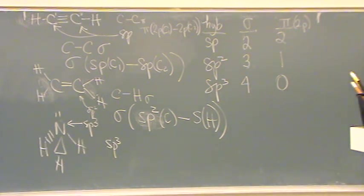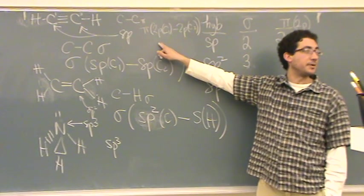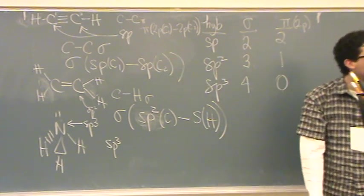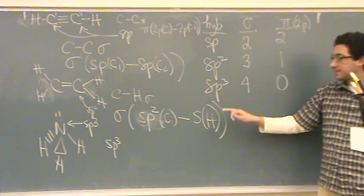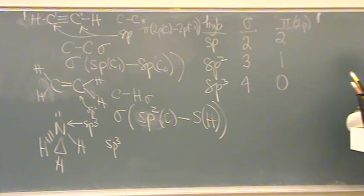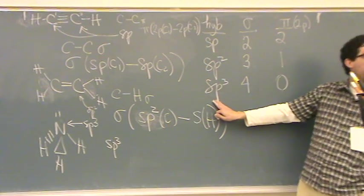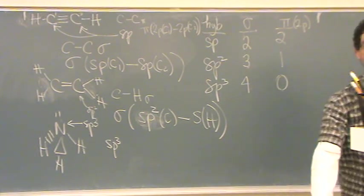2P orbitals are unhybridized, but they form those pi bonds. So if we asked you about a pi bond, for what you're going to be concerned with, it's always going to be between 2P orbitals. If we asked you about a sigma bond, it's always going to be between one of these, and sometimes an S if H is involved. Sigma has to do with these hybridized orbitals. The pi has to do with 2P.